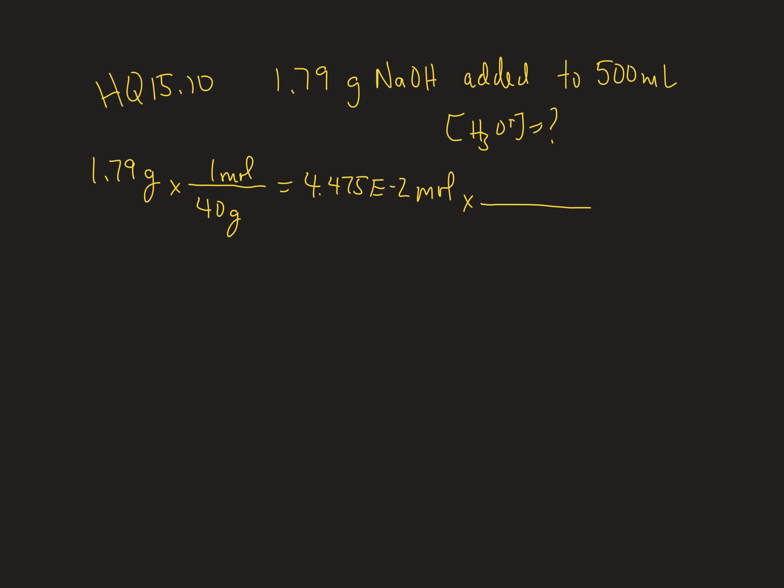Concentration is molarity, moles per liter. I have 500 milliliters which is 0.5 liters, so 1 over 0.5 liters. That leaves me with a concentration of 8.95 e to the negative 2 molar sodium hydroxide.